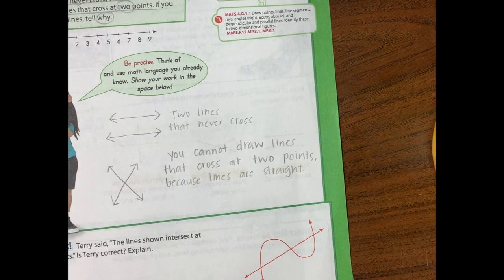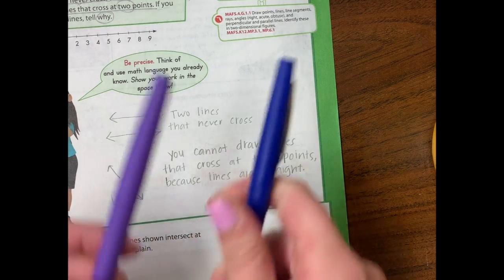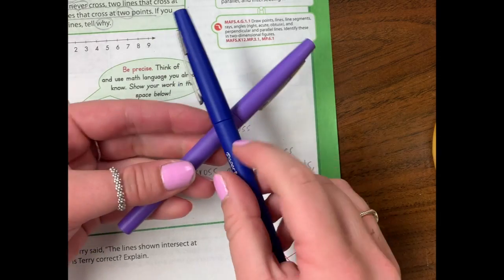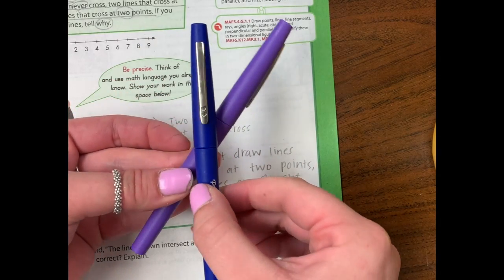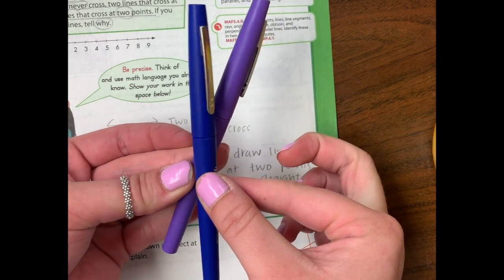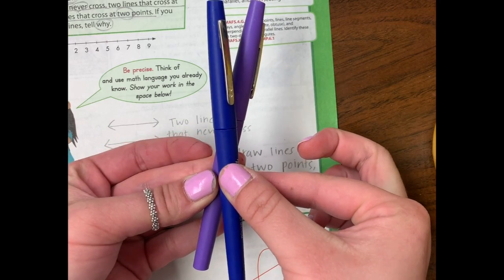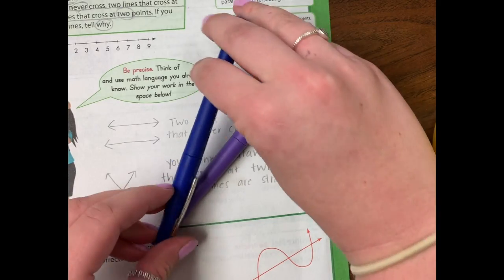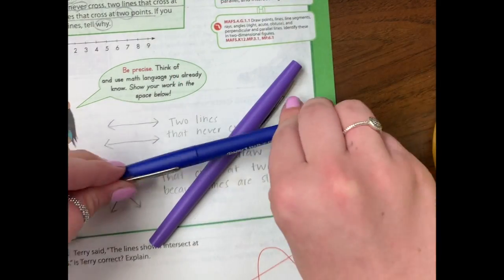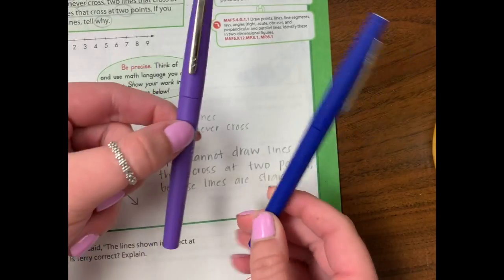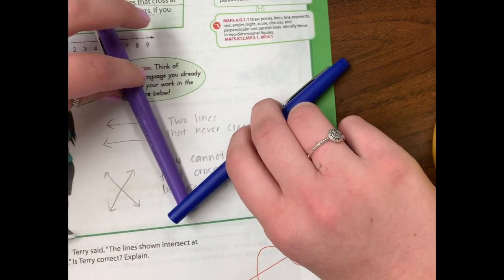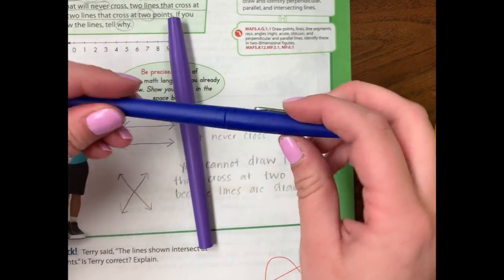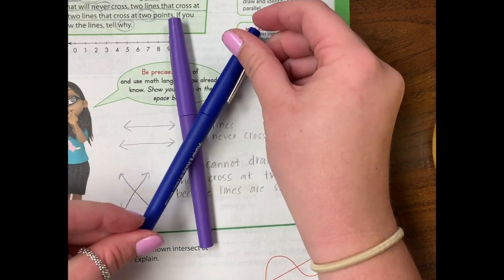And if you have a hard time imagining that, let's take two pins. These pins are straight. Here it is crossing at one point right here. No matter how I'm going to move these, no matter how close I'm going to get, they're only crossing at that one point. I can't bend this pin to make it cross at more than one point.